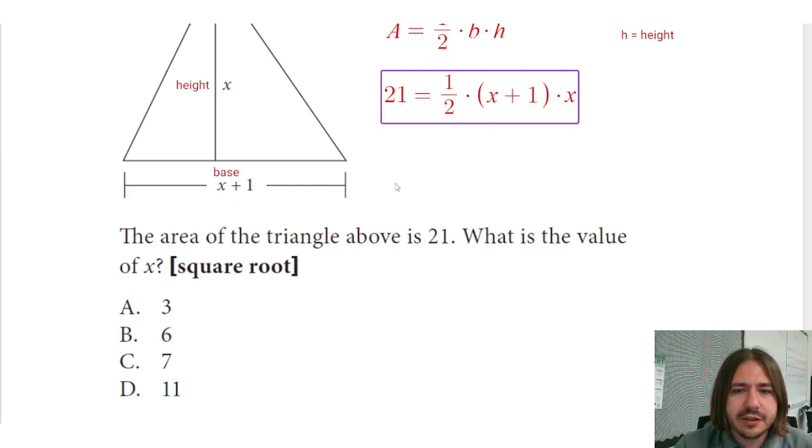So just really quickly, if x is 3, x plus 1 would be 4, right? So 4 times 3 would be 12, half of 12 is 6, it's not 21. I throw in 6 here, 6 plus 1 is 7, 7 times 6 is 42, and half of 42 is 21. So we know what our answer is going to be here, it's going to be B.